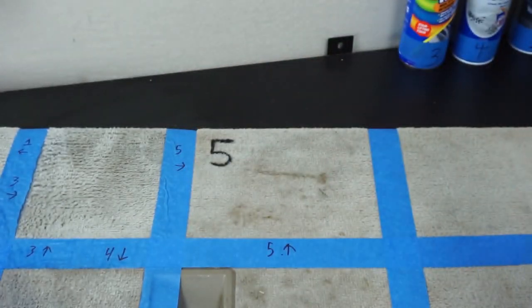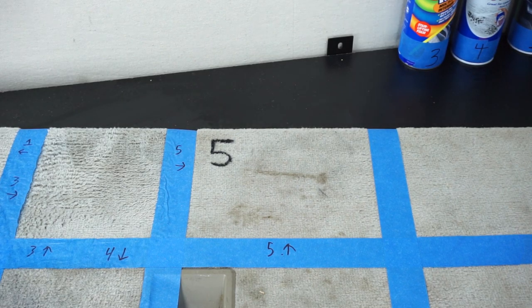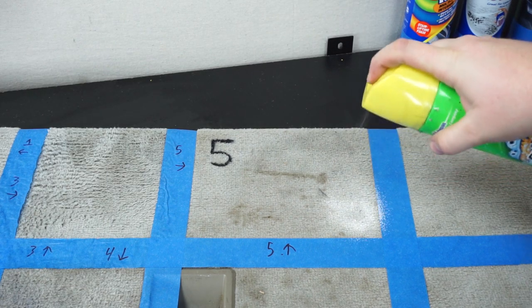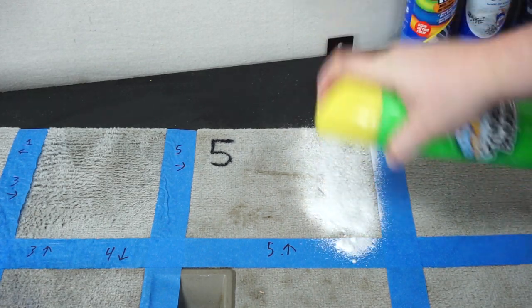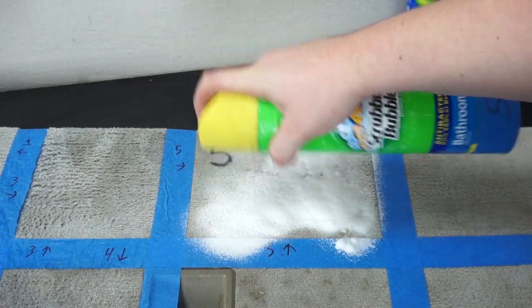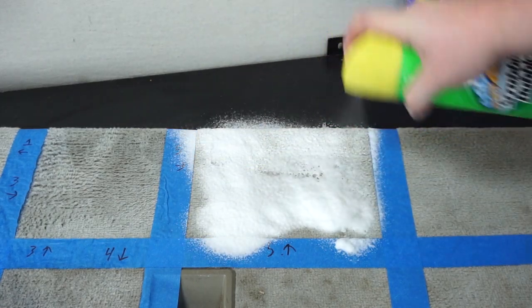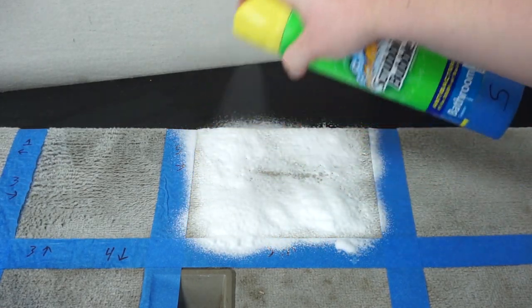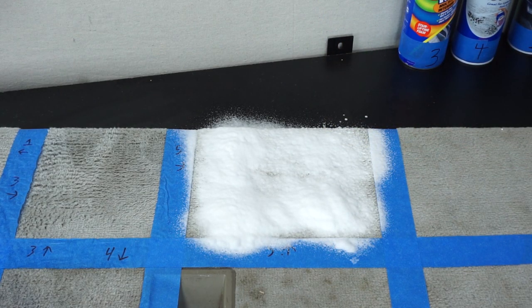I let the scrubbing bubbles sit on the carpet for one minute before using the brush from the Turtle Wax carpet cleaner and then wiping it off.